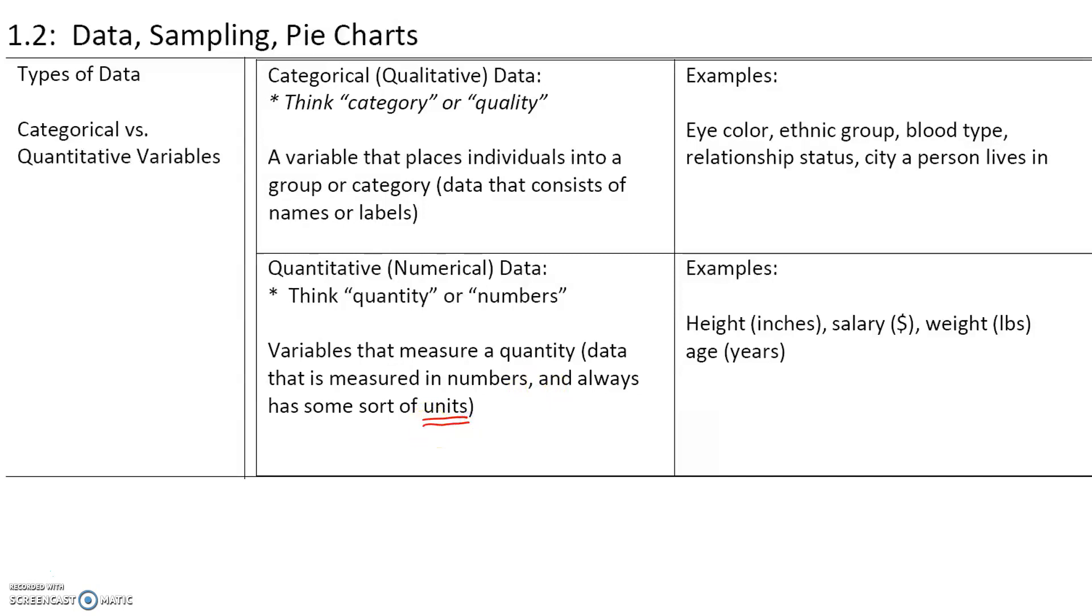A really good way to distinguish if a variable is quantitative or categorical is to determine if it has units. For example, height has units. In the United States, we measure height in inches. Salary has units. We measure salary in dollars.